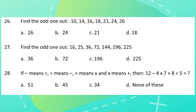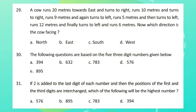Question 28: If subtraction means division, division means subtraction, addition means multiplication, and multiplication means addition, then 12 − 4 × 7 + 8 ÷ 5 is equal to? Question 29: A cow runs 20 meters towards east and turns to the right, runs 10 meters and turns to the right, runs 9 meters and again turns to the left, runs 5 meters and then turns to the left, runs 12 meters and finally turns to the left and runs 6 meters. Which direction is the cow facing?